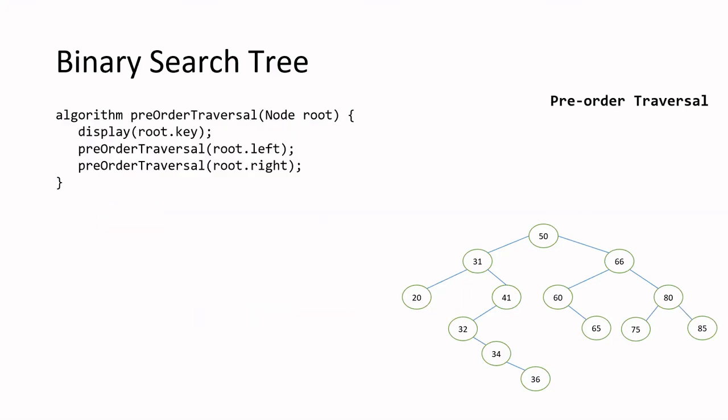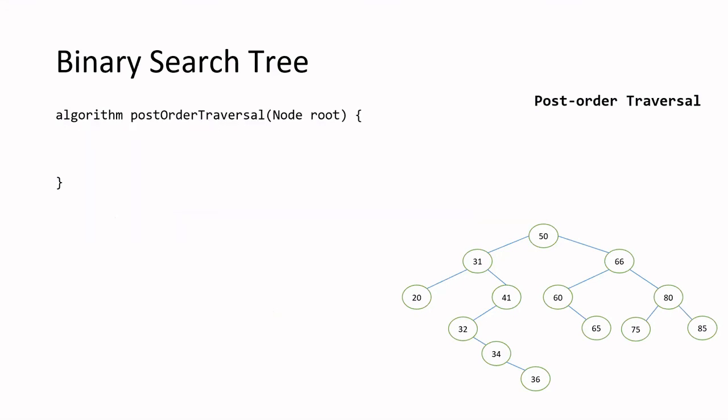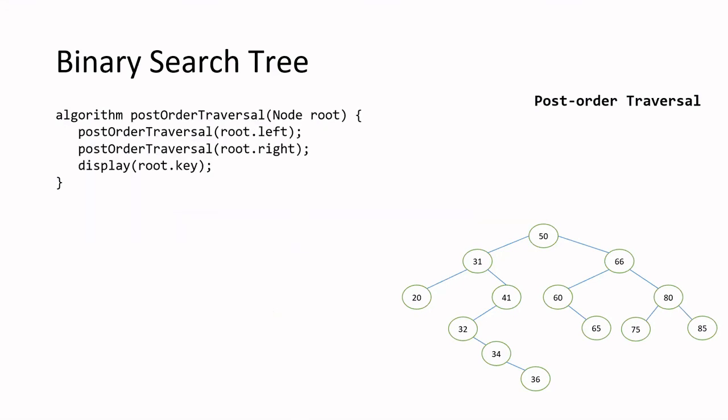Pre-order: print out the node's value first. Post-order: print out the node's value last.